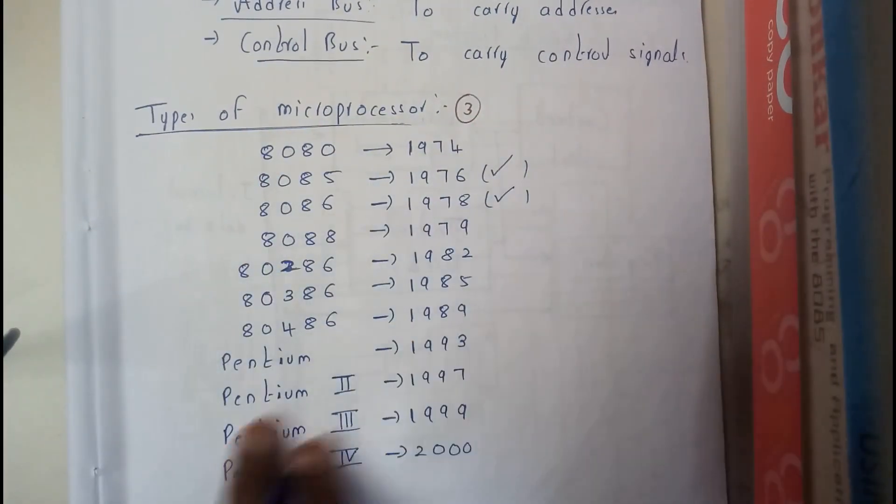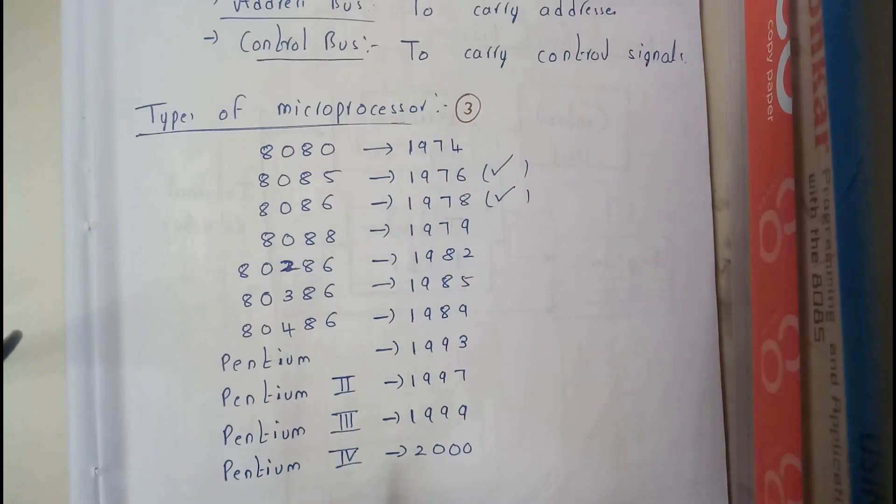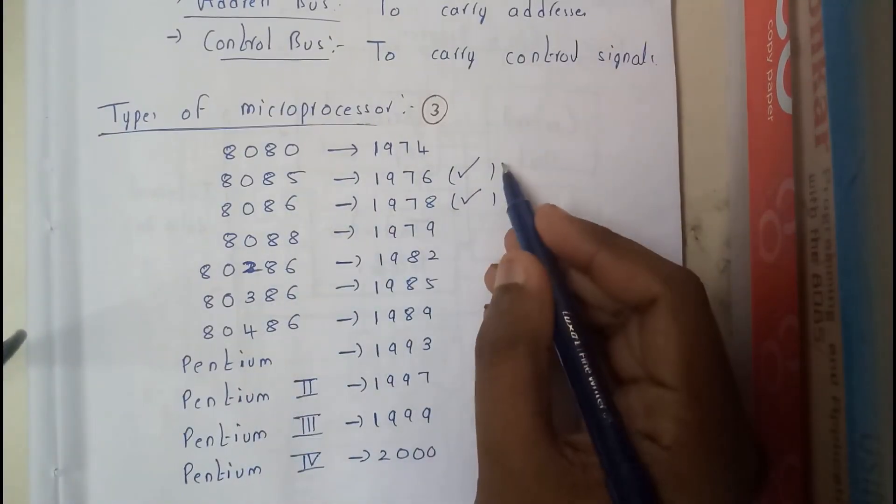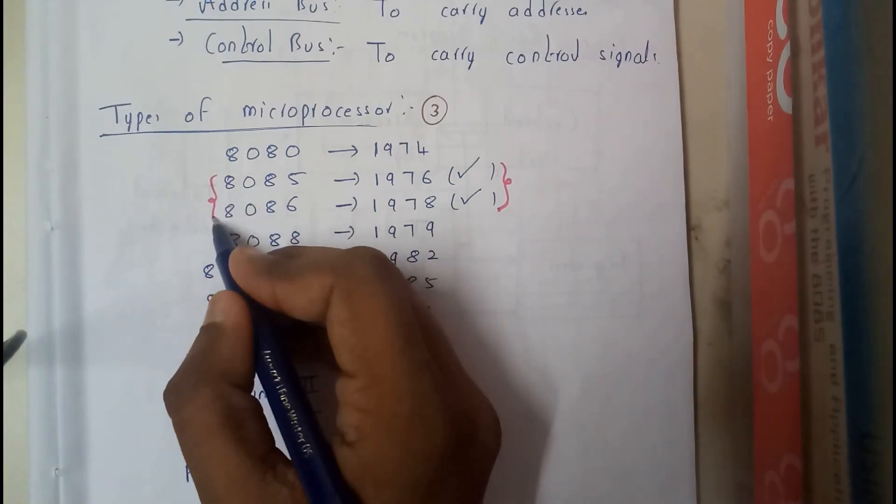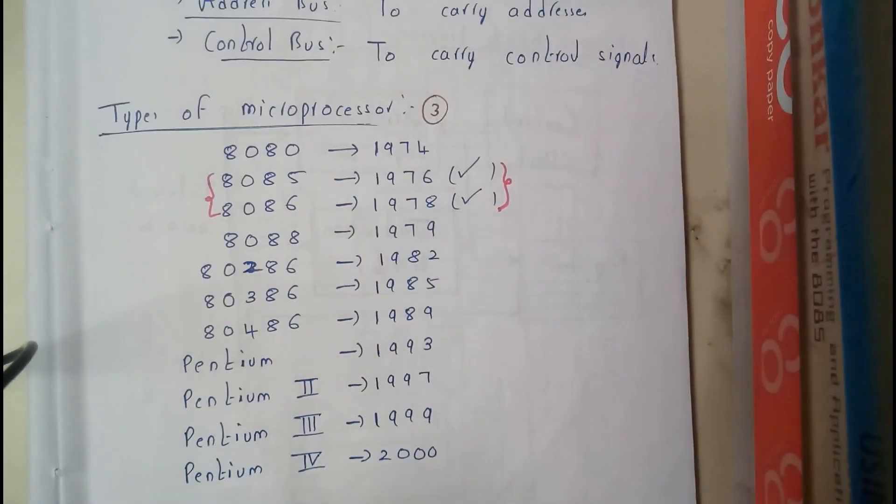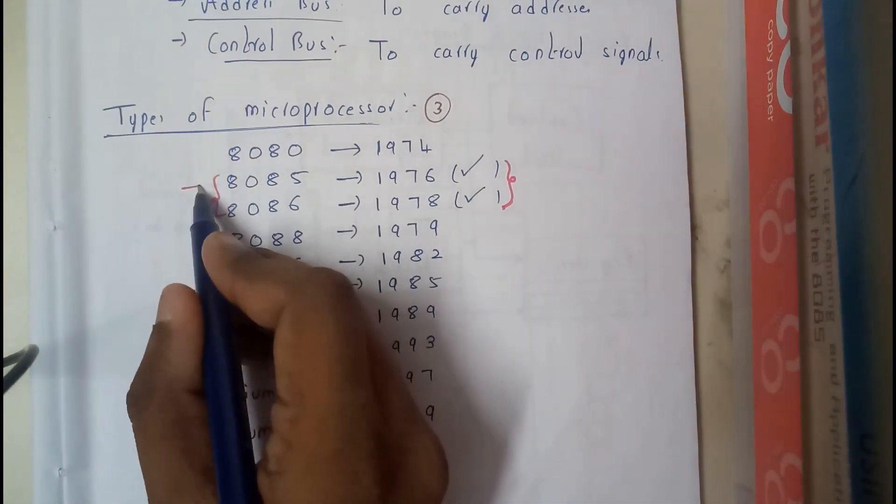So this is all the details of all the different microprocessors till 2000. The microprocessors that we will be covering in our syllabus are 8085 and 8086 microprocessors only. So this chapter consists completely of 8085.